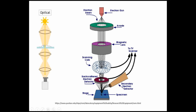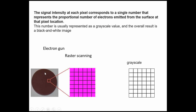The electron beam collides with the sample, generating backscattered and secondary electrons. Secondary electrons are collected by one detector and backscattered electrons by another, and these are used to generate images. The electron gun focuses on each pixel of the sample to get information, then moves to different pixels in a raster pattern. The signal intensity at each pixel corresponds to the number of electrons emitted, represented as a gray value, producing an overall black-and-white image in SEM.